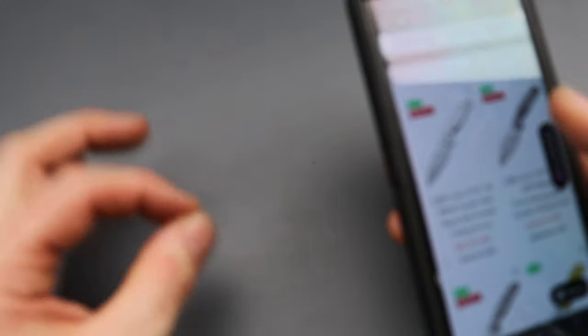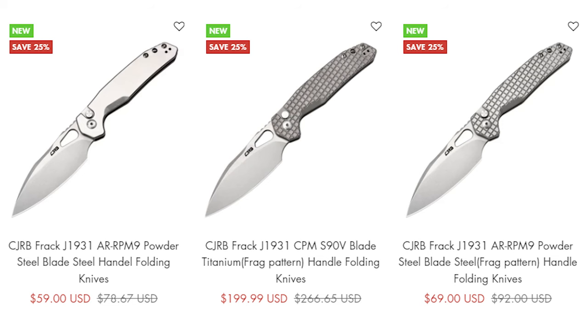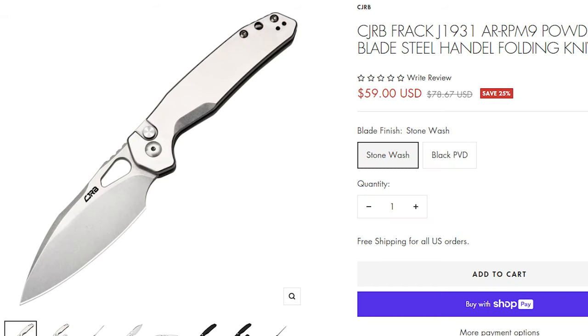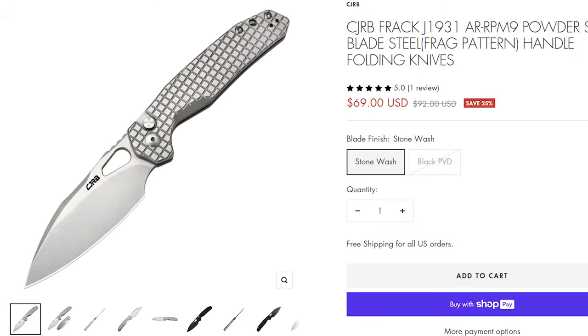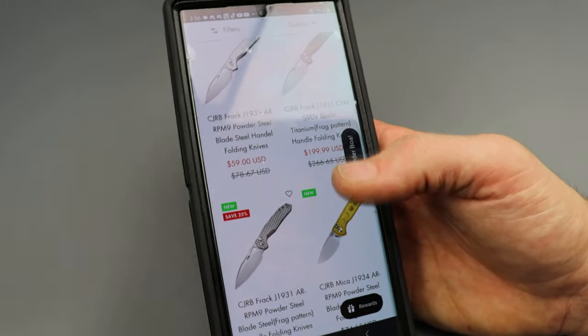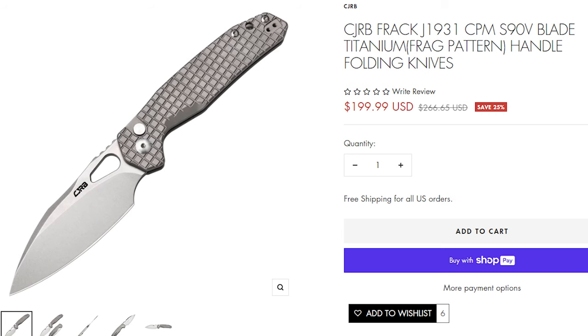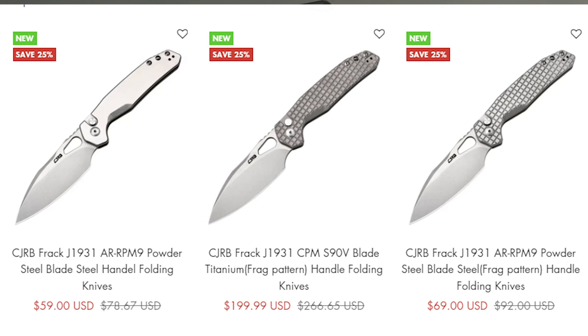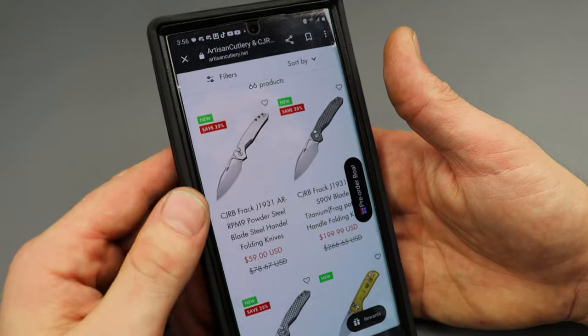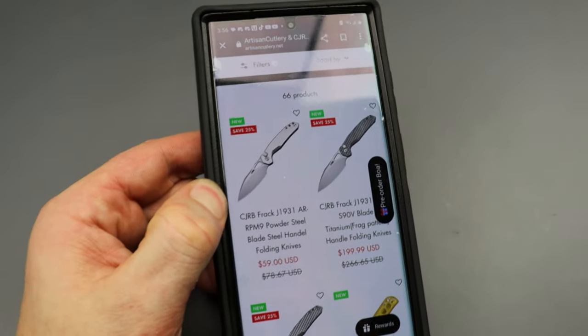Also guys, CJRB has a new model, the Frac. Now the Frac has a plain steel version for $59 and a frag steel version for $69, and an S90V titanium version. Personally, I think this knife looks dope. I love the look of it. I love the way the handle looks. I love the blade shape. I'm hoping to get this one on the channel. If you guys have tried this one, let me know down in the comments how you like it.